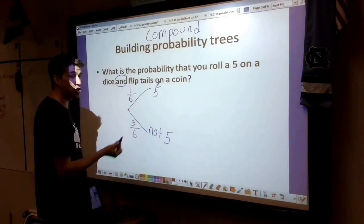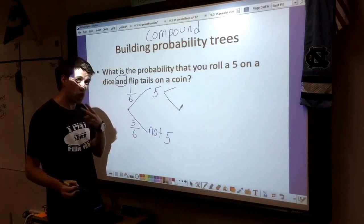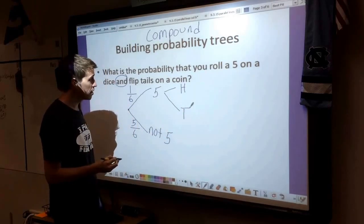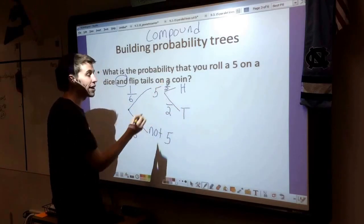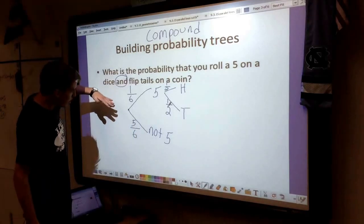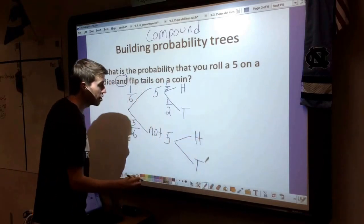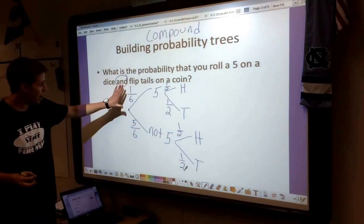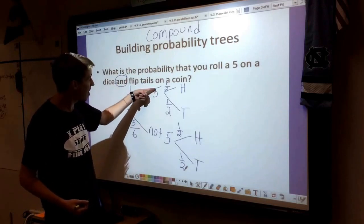But I don't want to know just about rolling a 5. I also want to know about flipping tails on a coin. So I'm going to go to the end of both of my trees here. Let's say I do roll a 5. After rolling a 5, I have two options when I flip my coin: heads or tails. I see there are two options, so the probability of either will be out of 2. There's only one way to get heads and one way to get tails. If we get not a 5, we're still going to flip the coin and you still have heads or tails. The probability is the same, it's still a half chance for heads and a half chance for tails.